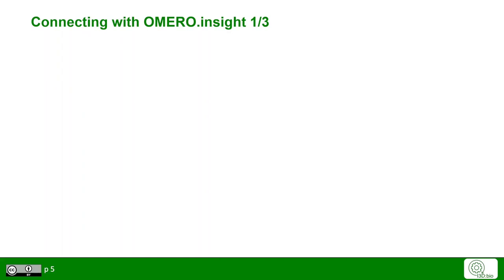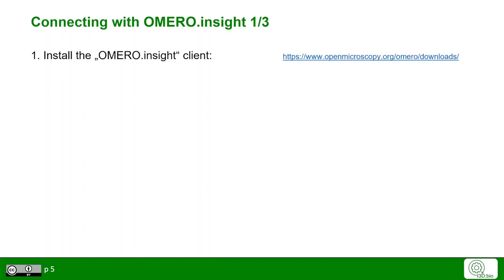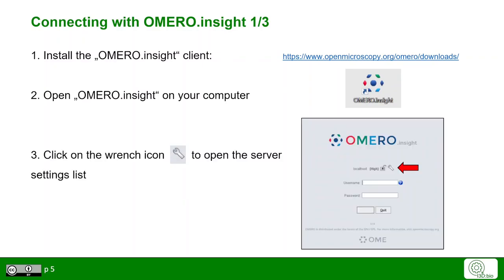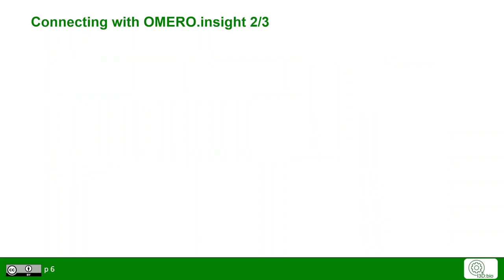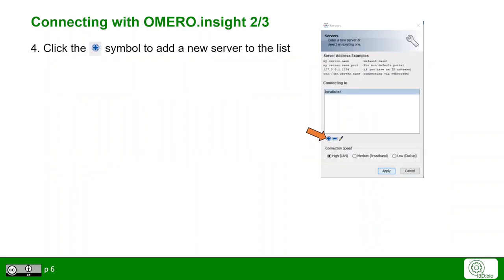To connect to OmeroInsight, you need to install the OmeroInsight client on your computer. Then open the Insight client window. First, click on the wrench icon to open the server settings. In the server settings, you will need to add a new server, since the local host server is not the right path. Click on the plus.